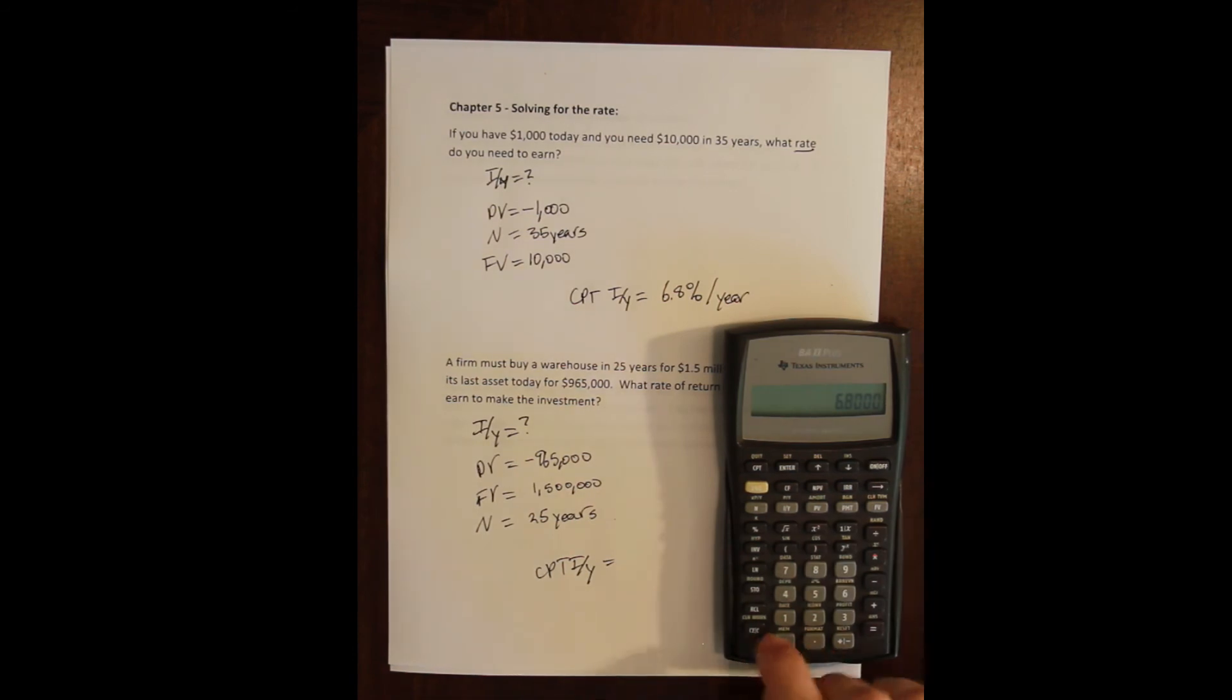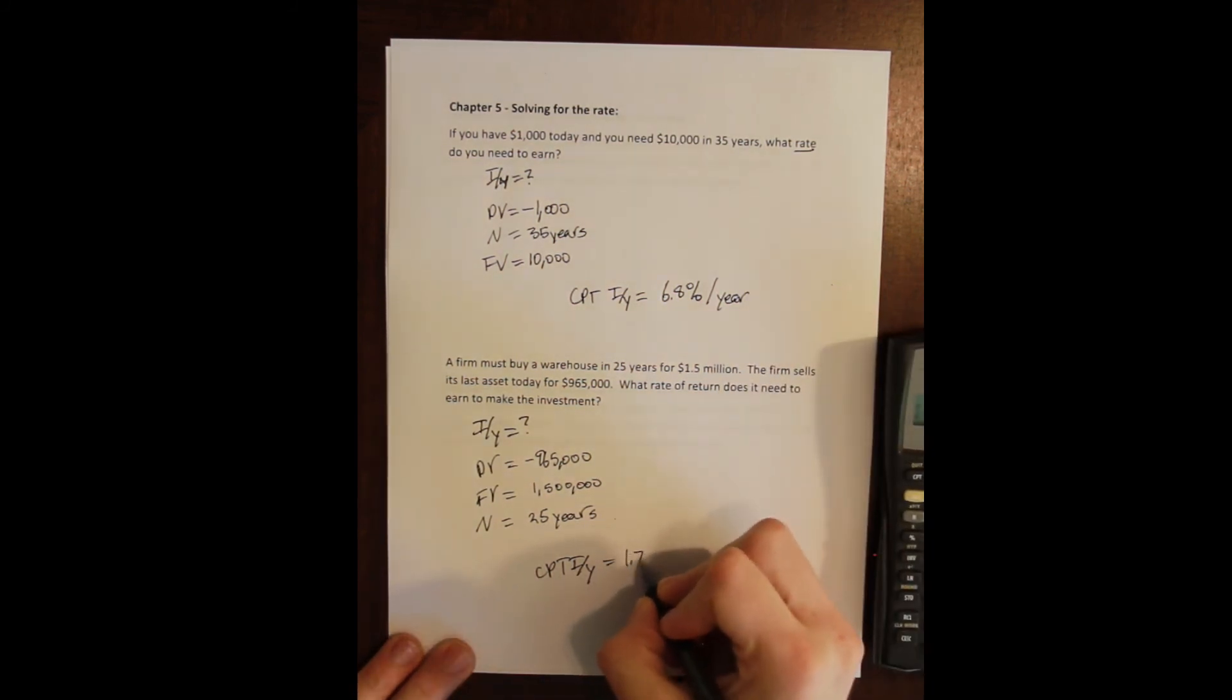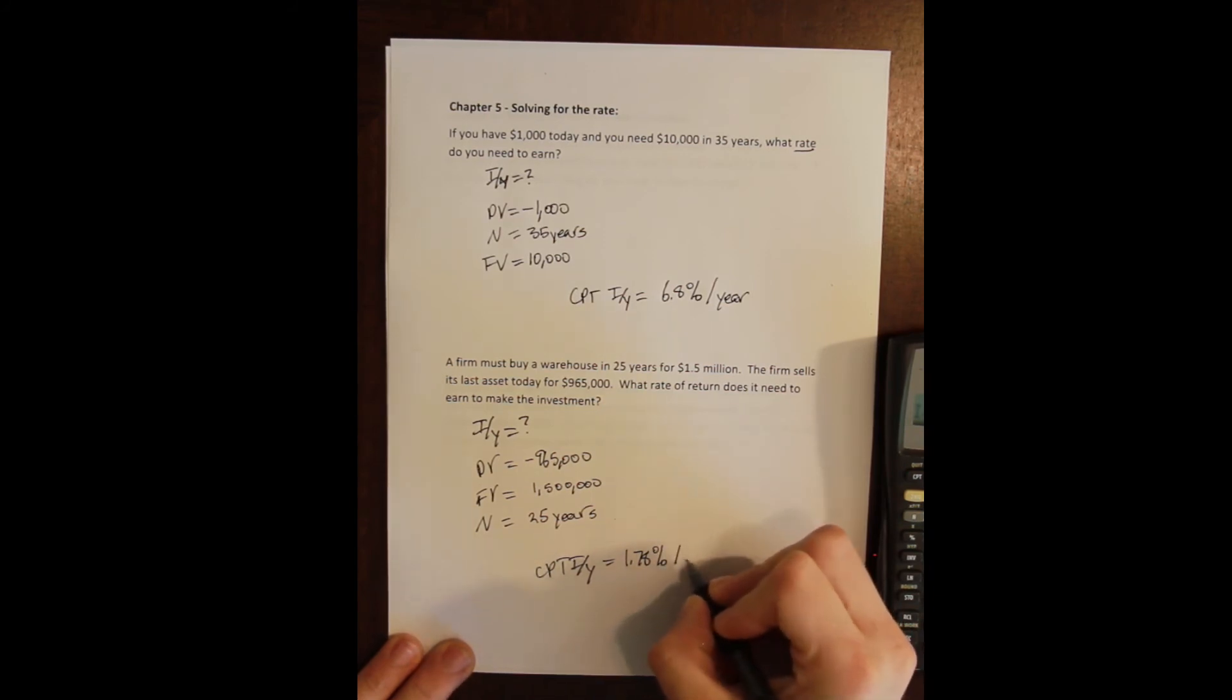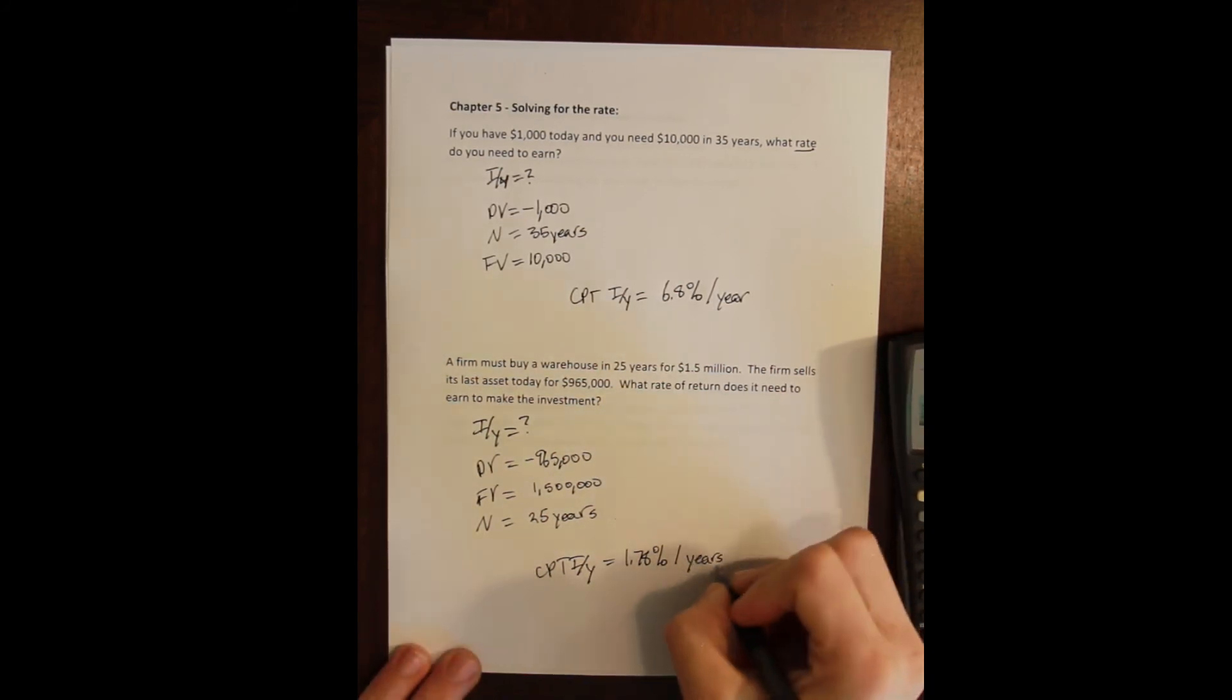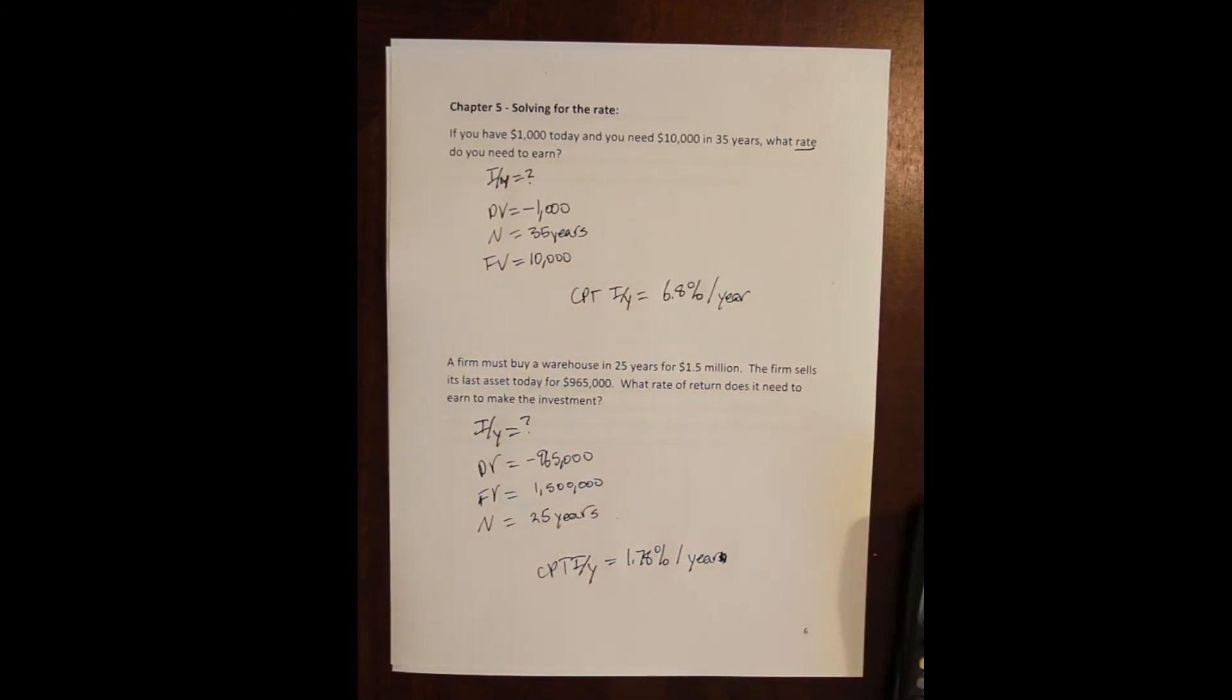So I will clear my time value money. I have a $965,000 investment. This is a cash outflow because I am making the investment. That's my present value. Once I close the account in 25 years, I'll have $1.5 million that I can then subsequently spend. But when closing the account, that's a cash inflow. That's money coming back to me, even if it's only temporarily. And I'm going to have it in the account for 25 years. So that's 25 and N. I compute my IY and I get 1.78. Now remember this is in percentage terms and it is in the same period as the period of my input. So that is 1.78% per year.